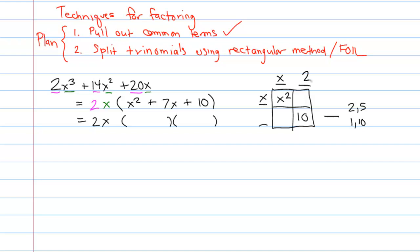If I attempt to do a 2 and a 5, then the rectangular method would say that the remaining terms would be a 2x and a 5x, and 2x plus 5x would be a 7x. And so we've got the factorization, x plus 2 and x plus 5. And so that's our final answer.